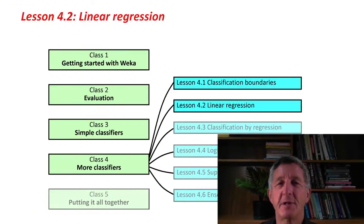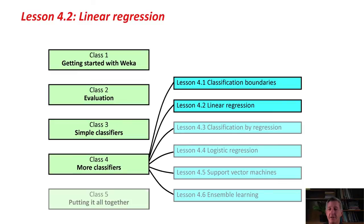A classification problem is when what you're trying to predict is a nominal value, whereas in a regression problem, what you're trying to predict is a numeric value. We've seen examples of datasets with nominal and numeric attributes before, but we've never looked at the problem of regression, of trying to predict a numeric value as the output of a machine learning scheme. That's what we're doing in this class, linear regression.